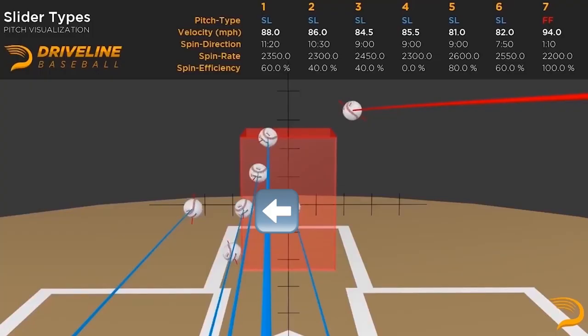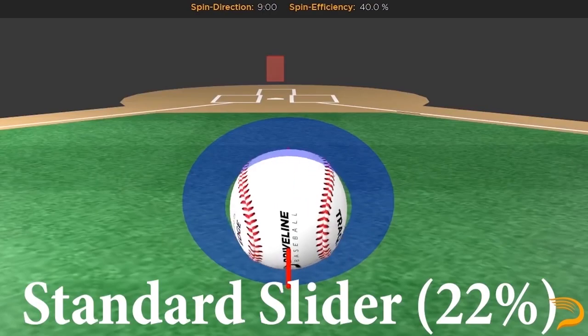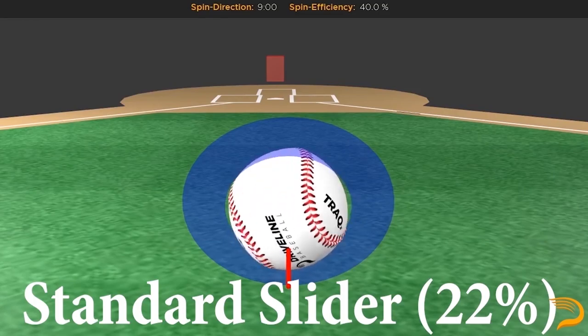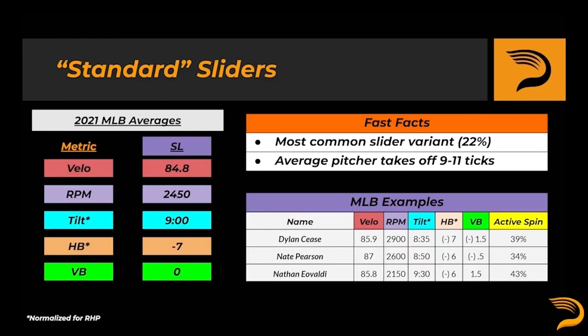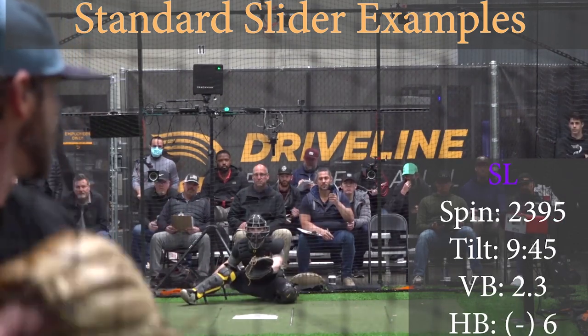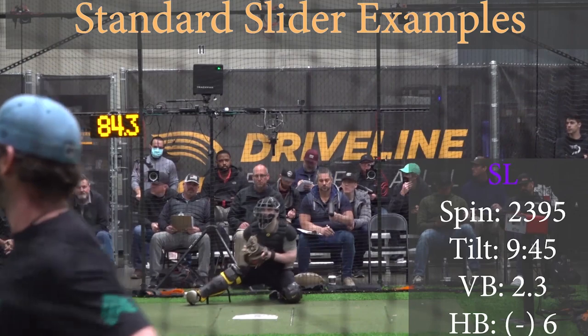The standard slider still comes equipped with primarily gyro spin, but begins to be influenced by side spin and picks up glove-side action as a result. The pitch is the most common of the variants listed in this video. Relative to the gyro, the pitch is thrown about half a tick slower on average and has about 5 to 9 inches of glove-side action. It also has, on average, about 150 more RPMs. Dylan Cease, Nate Pearson, and Nathan Eovaldi are all examples of pitchers who throw this. Visually, we can start to see sweep or glove-side action being generated due to increased side spin on the offering.